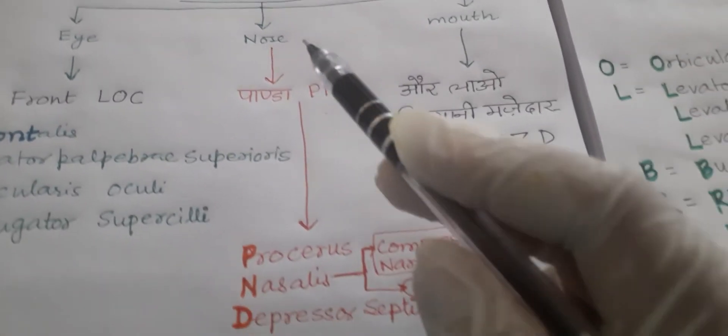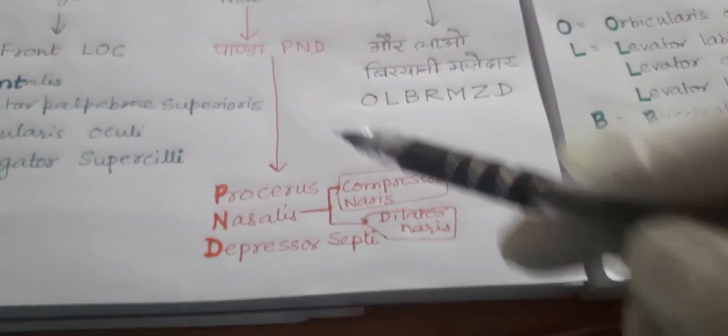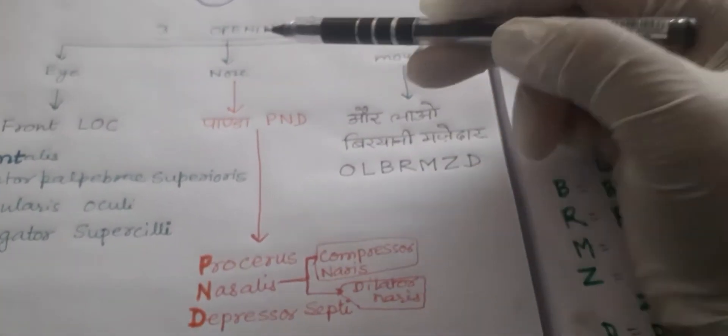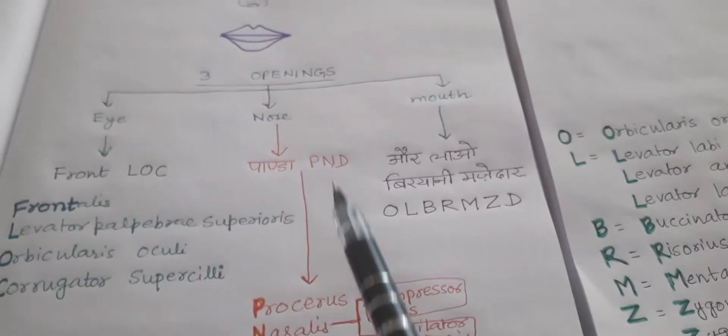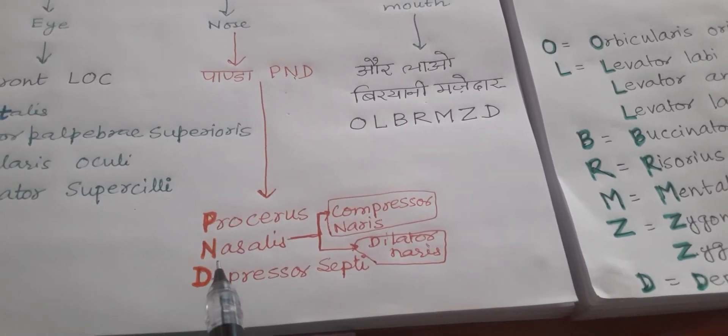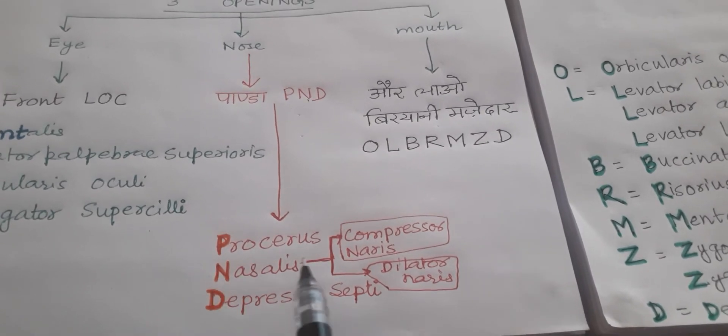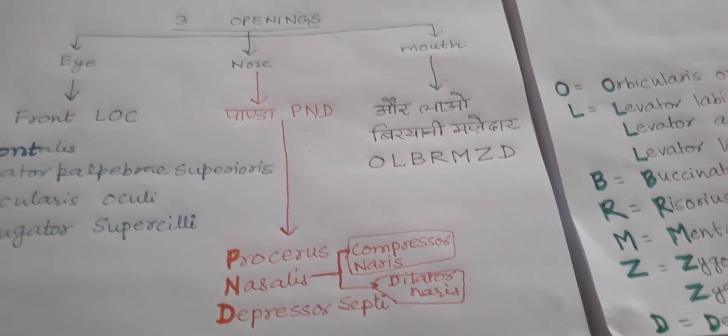Now the second one is the nose, the muscles around the nose. Nose of panda is so cute - panda. So muscles around the nose is P-A-N-D-A: procerus, nasalis, and depressor septi.